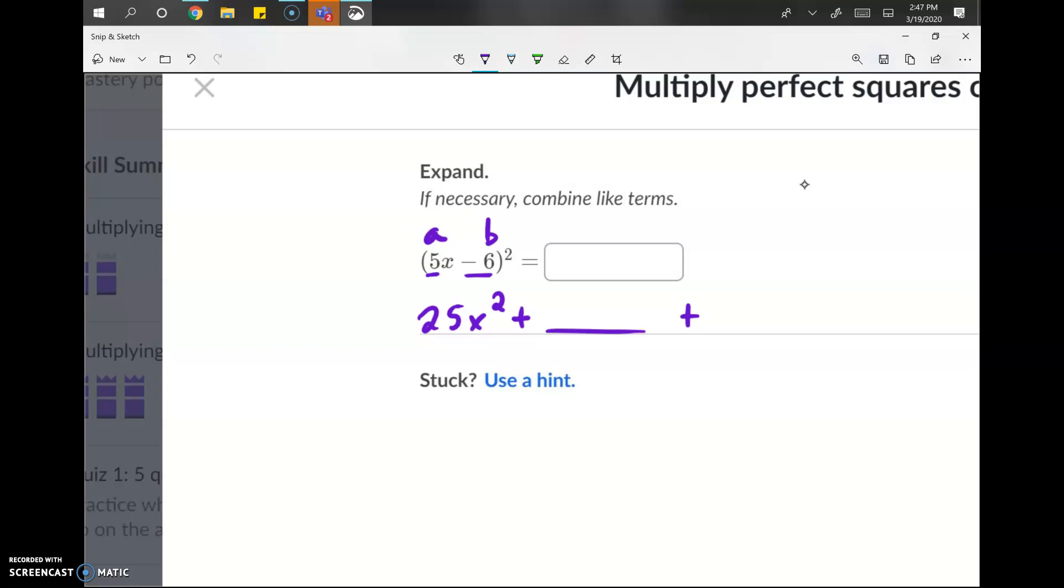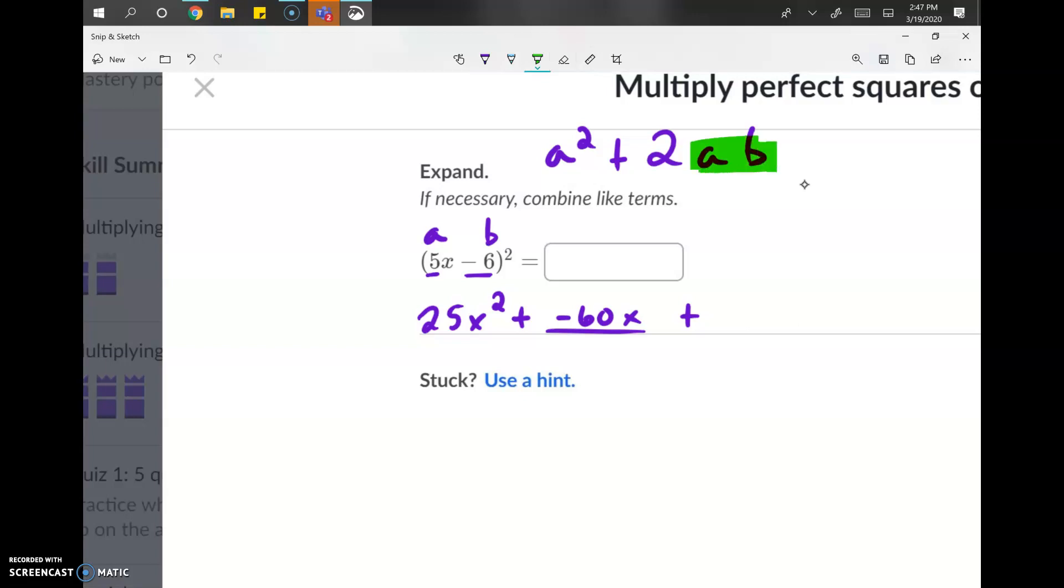So, 5 times negative 6, that's negative 30. Negative 30 times 2, that's negative 60. Negative 60 times x, negative 60x. That's really all we're doing with the middle term. Multiply the two numbers it gives you, then double it. A² plus 2AB, right? We're just multiplying A and B together and then doubling it.